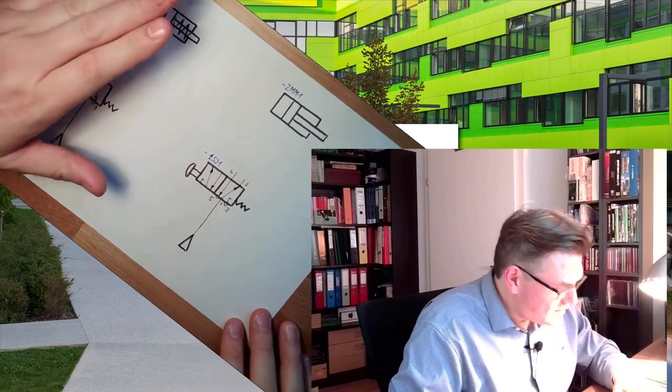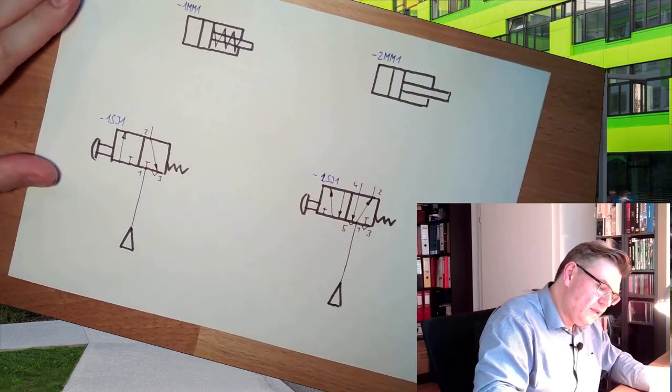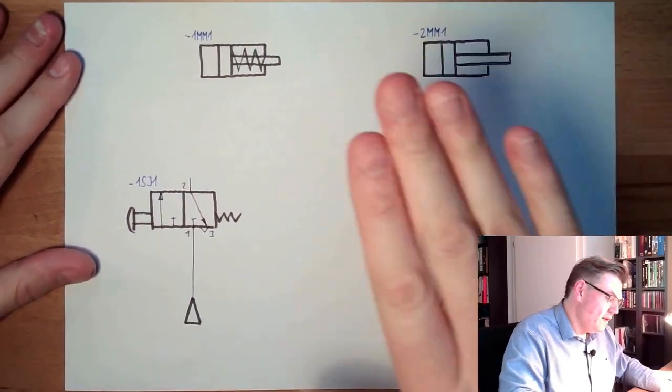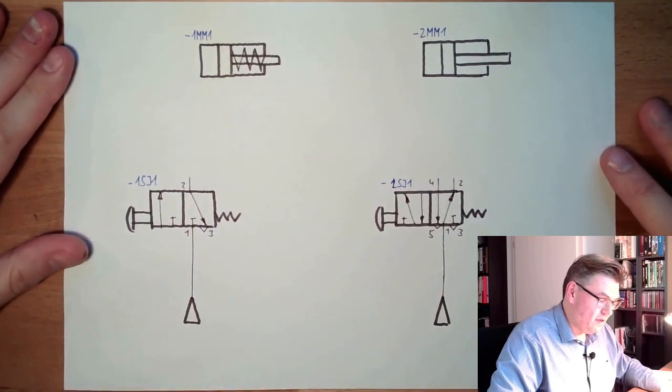Let's have a look at this drawing. I already prepared a little bit something here. So this is the single-acting cylinder part, here is the double-acting cylinder part.